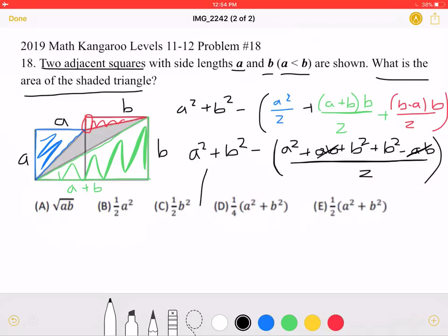If we continue this, we will get A squared plus B squared minus A squared over two plus B squared. We can see that the B squareds will cancel, so we'll be left with A squared minus A squared over two, which is equal to A squared over two.